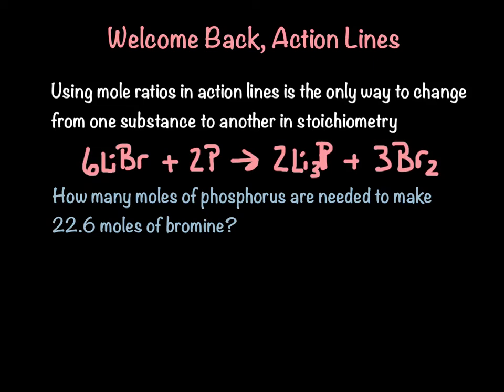Action lines are coming back. Today is a really simple action line, so don't let it scare you. Using mole ratios in action lines is the only way to change from one substance to another in stoichiometry. If I have a certain amount of lithium bromide and I want to know how much lithium phosphide it makes, I have to use mole ratios — the numbers in front from the balanced chemical equation, which represent the number of moles.